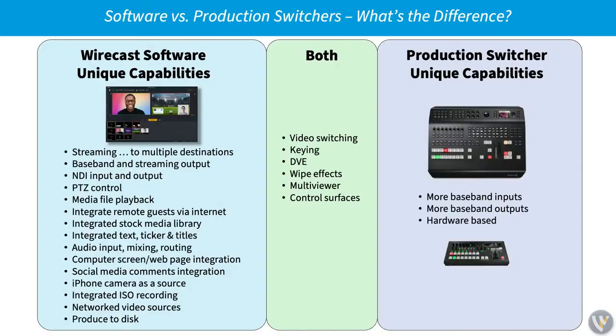Beyond that, being able to integrate stock media — having all those stock media sources as distinct files that you'd have to pull into a hardware switcher versus a piece of software like Wirecast, which has a built-in stock media library. There's a lot of value and flexibility to be gained from using that software. But if you know exactly what you're going to put on air and just want it right there, the hardware switcher can handle that too. There's a comparison slide showing the differences and overlap between software and hardware switchers.